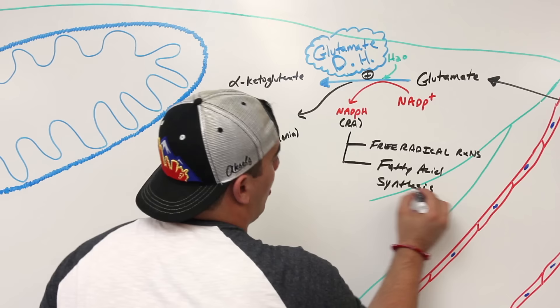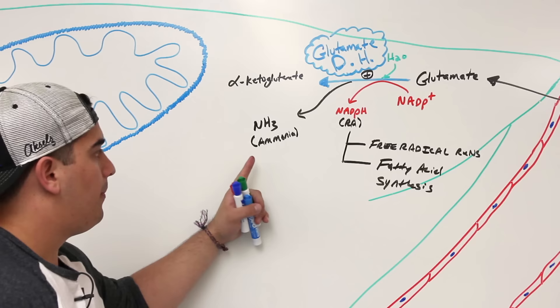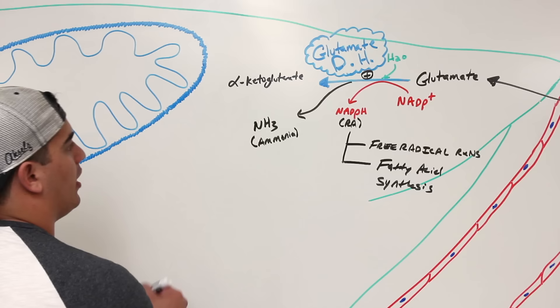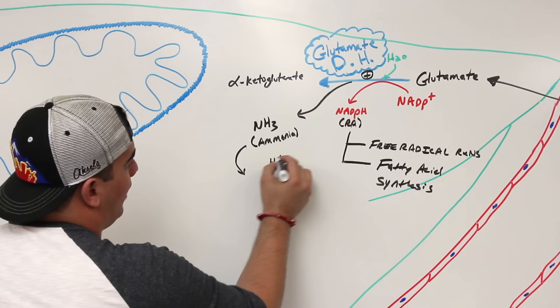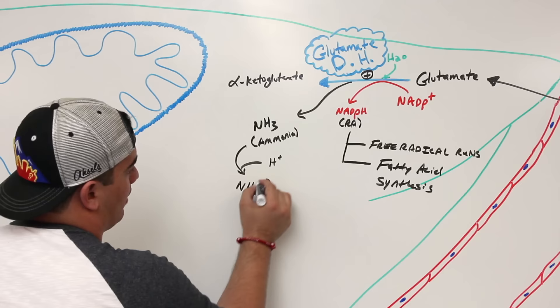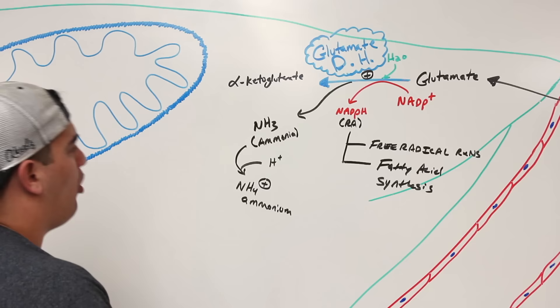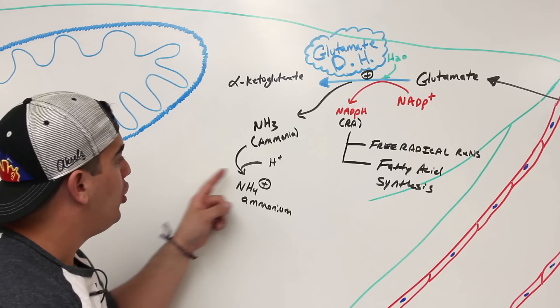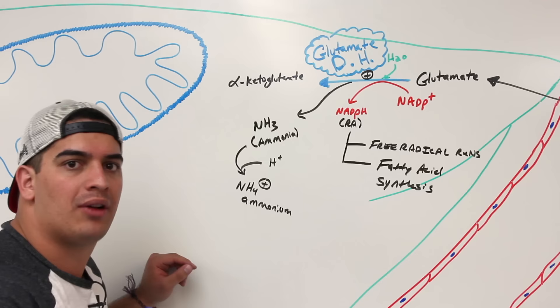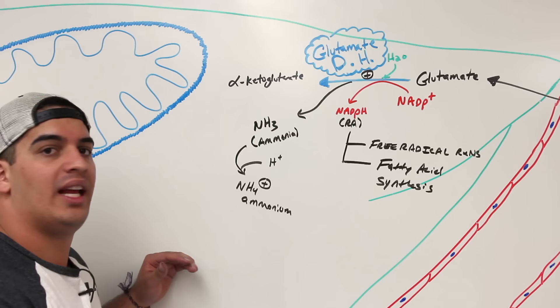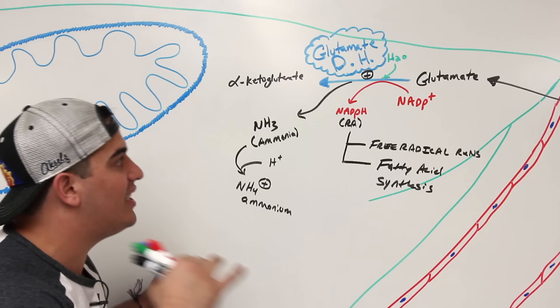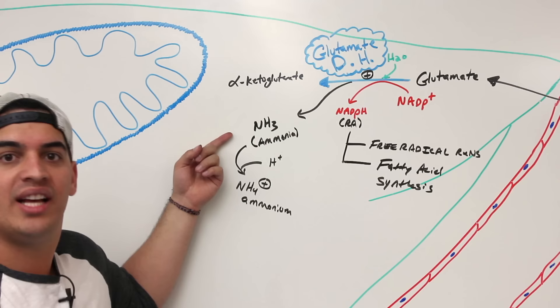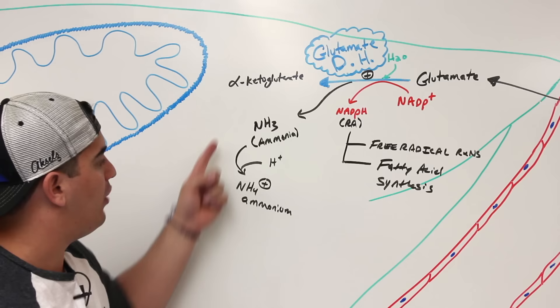Now let's talk briefly about why ammonia is toxic. Ammonia can gain a proton and turn into NH4+ — ammonium. When would you generate a lot of toxic ammonia? If there's excessive protein breakdown or degradation — for example, certain bodybuilders taking in excessively large amounts of protein that their bodies can't incorporate into tissues. As those proteins are consistently catabolized, it's going to generate tons of ammonia, which is super toxic. This ammonium can then get pushed into the bloodstream.